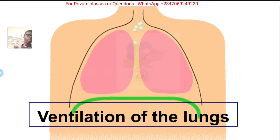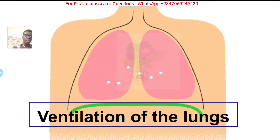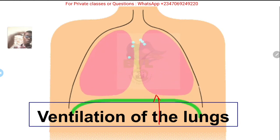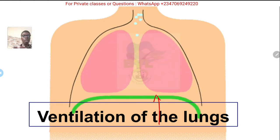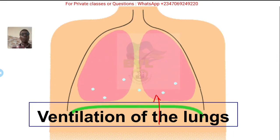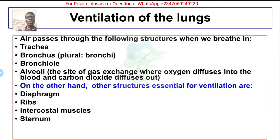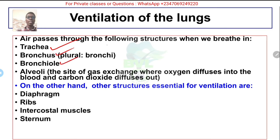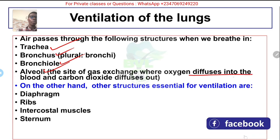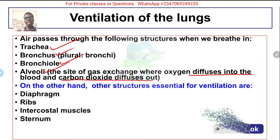You can see the two lungs getting smaller to exhale and bigger to inhale, and the diaphragm goes up to exhale and down to inhale. The structures involved in ventilation are the trachea, the bronchus (singular), the bronchioles, and then the alveoli — which is the actual site of gas exchange where oxygen diffuses into the blood and carbon dioxide diffuses out of the blood into the alveoli.